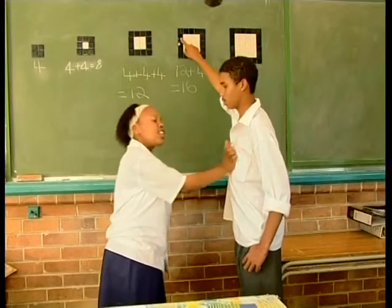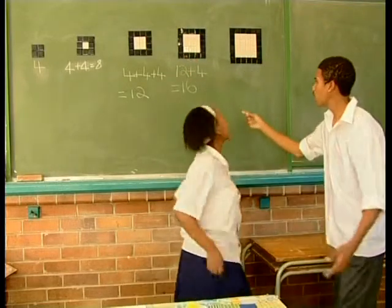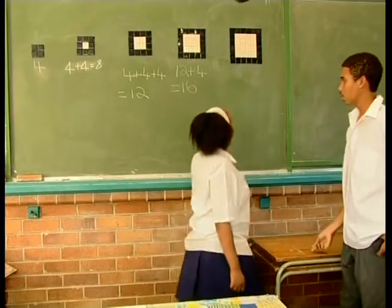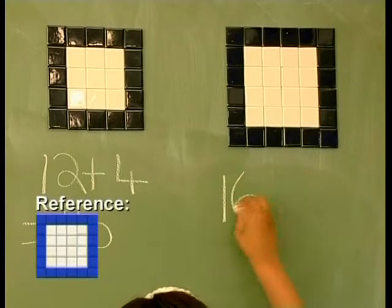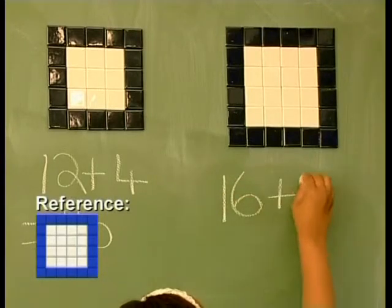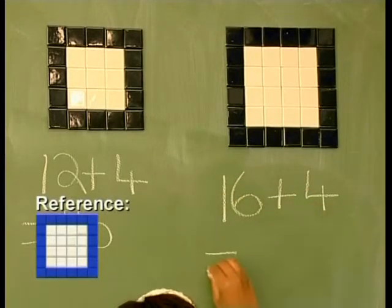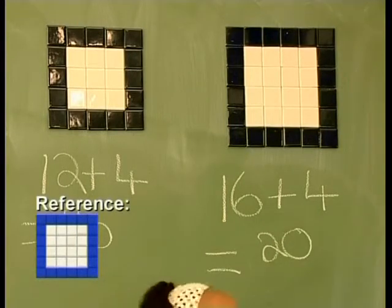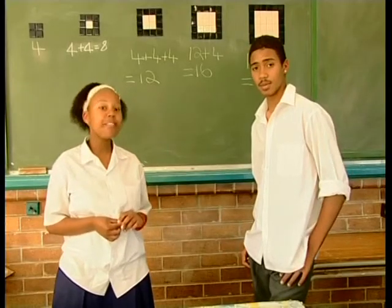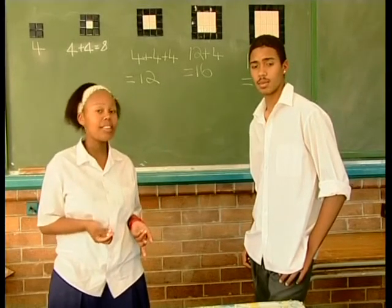If you continue, in the next diagram we'd see that it'll be 16 plus 4 which gives us 20. That's a good observation. But we haven't figured out how many cream squares there'll be yet. Well, why don't we have a look at that together then?